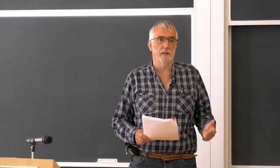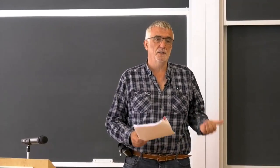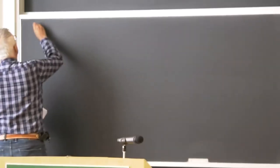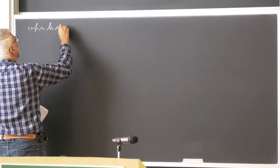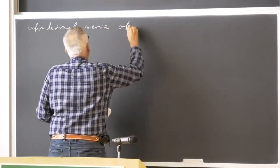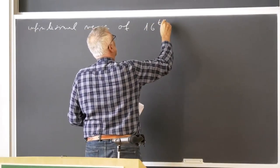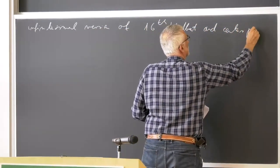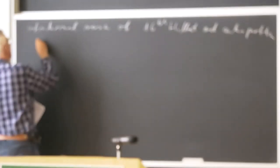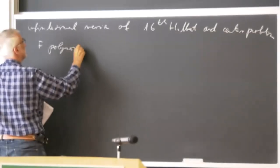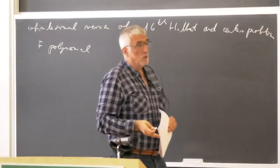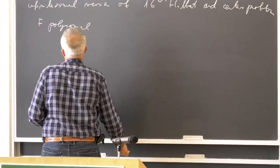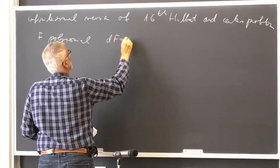Essentially, everybody here knows two classical problems in the study of differential equations in the plane: the 16th Hilbert problem and the center problem. What will be discussed is related to the infinitesimal 16th Hilbert and center problem. We start with f, which is a polynomial — real or complex, though all arguments will be complex — and we consider the foliation given by df = 0.